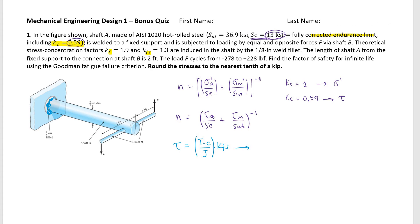The torque equals the distance times F, and with two forces it's distance times 2F. With a distance of 1 inch and two forces, T equals 2F. So the maximum torque is 2 times 228, which gives 456 pound-inches.